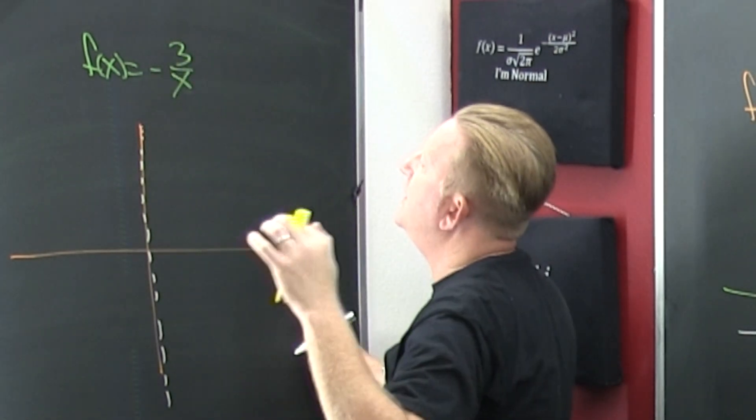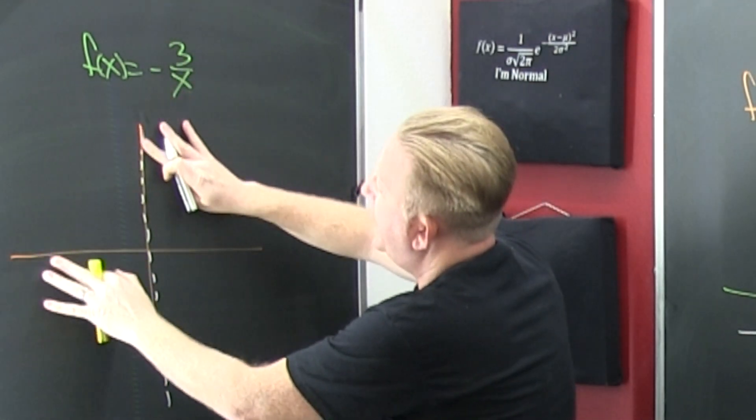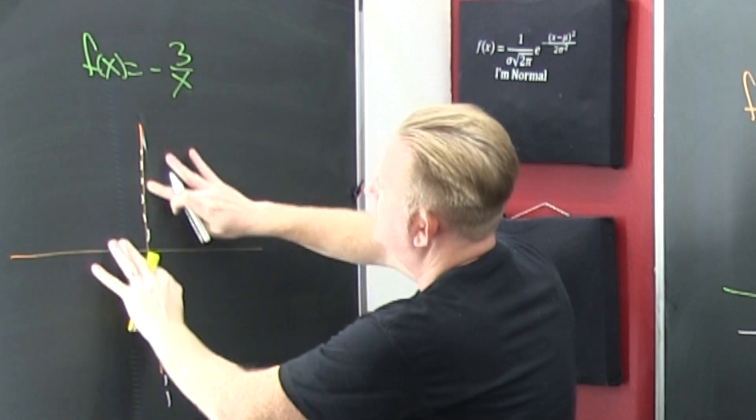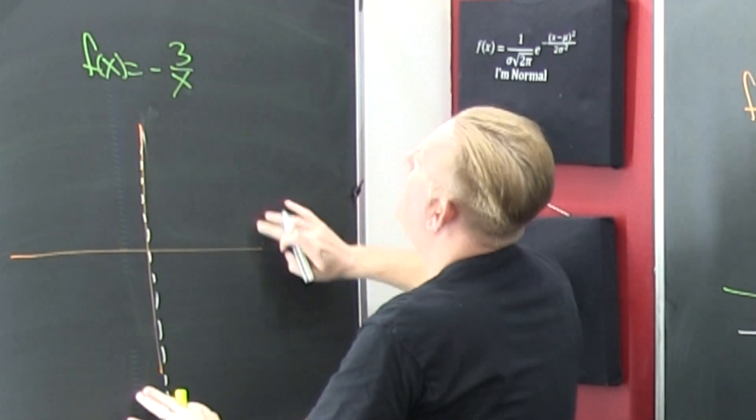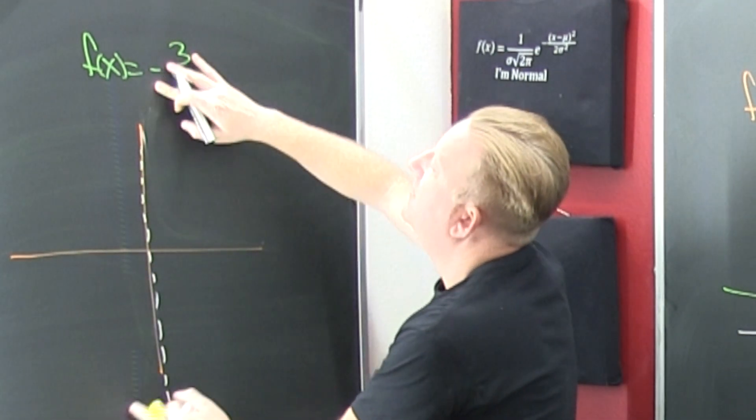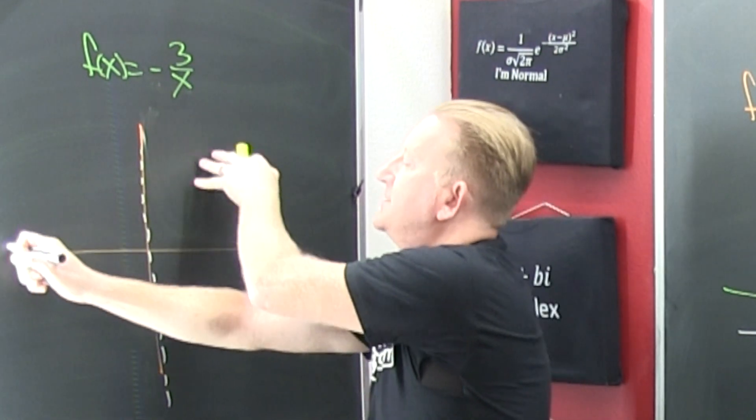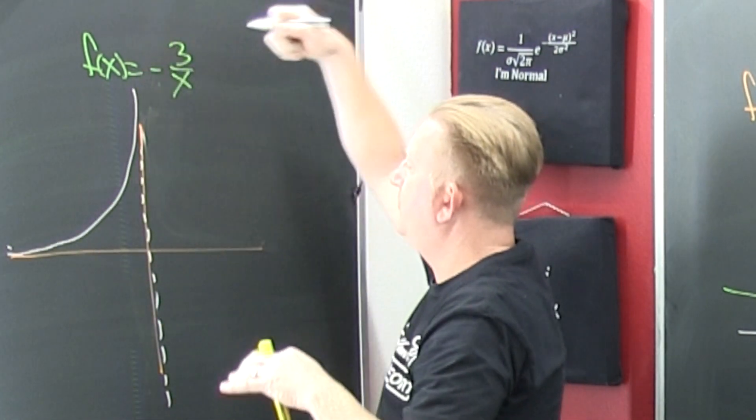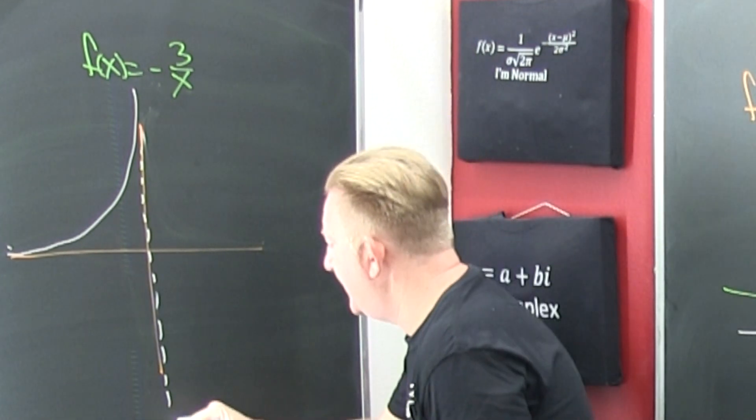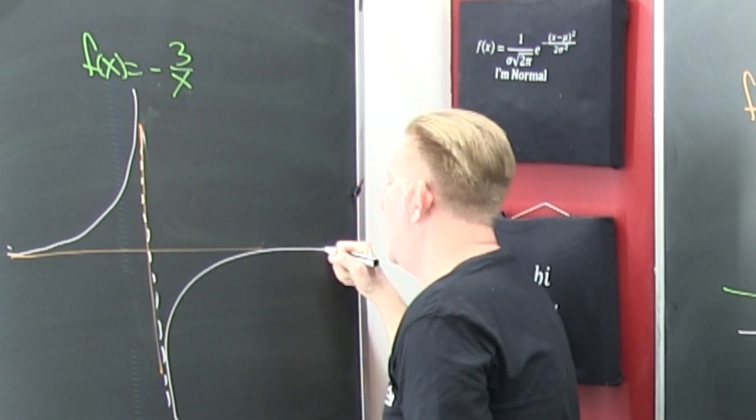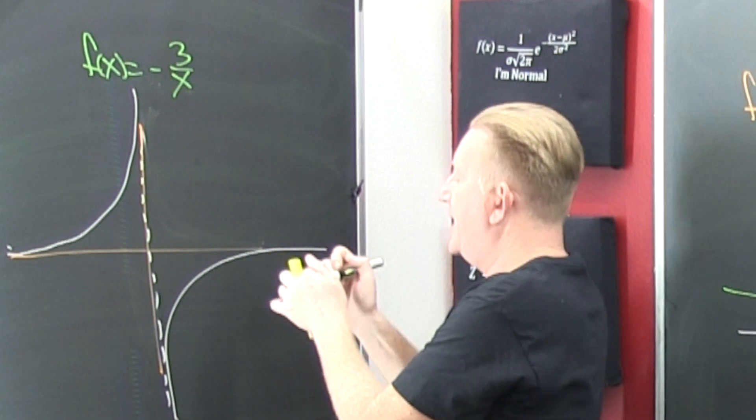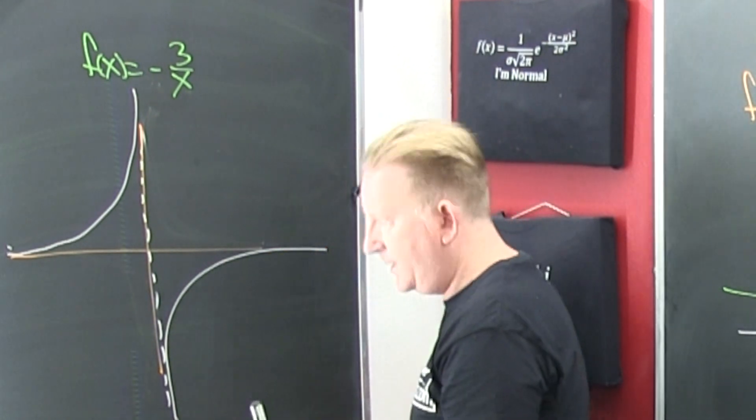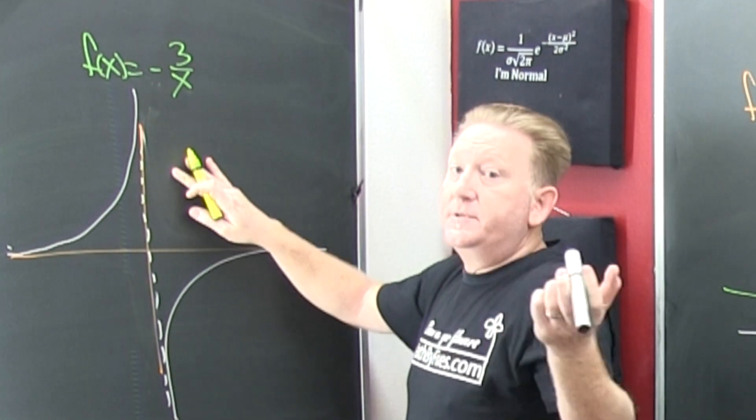The normal 1 over x looks like this, but with the minus in front, it's a flip on the y-axis. And that's why this guy goes like this. So it looks like that.